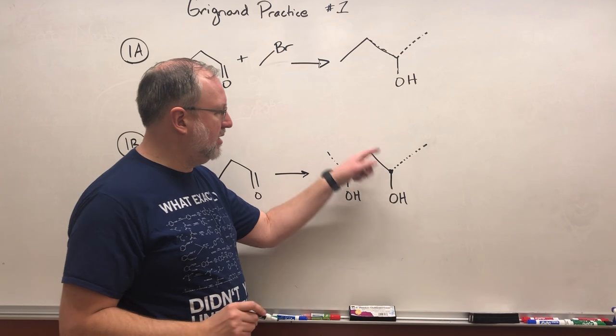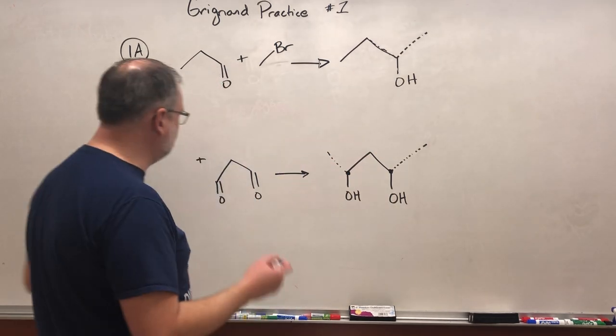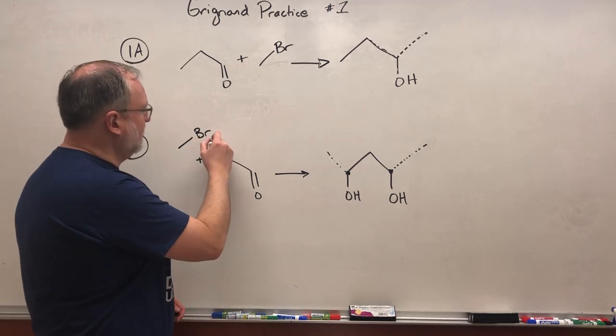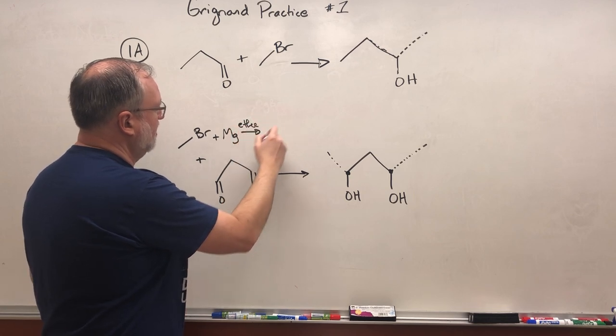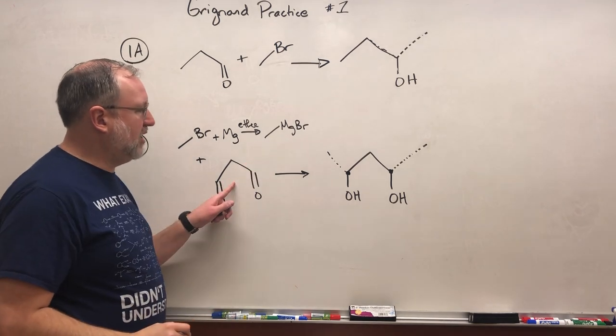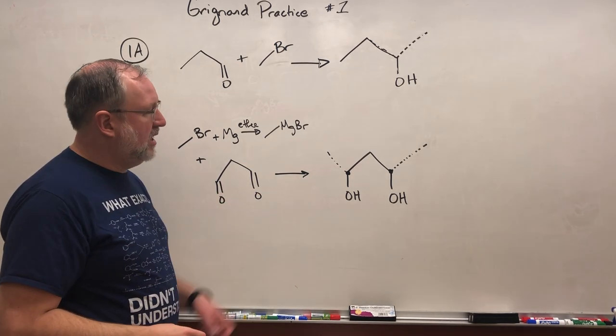So here's our three carbon reactant and what must have been here and here, those must have been the Grignards. So something like this and then we could take this and react with Mg in the presence of ether to make this one carbon Grignard reagent and this can react with this. We need a workup step where we add H2O and that would make this.